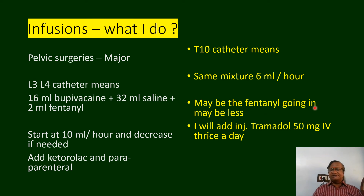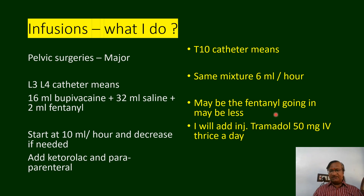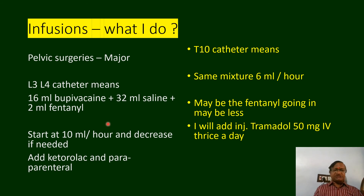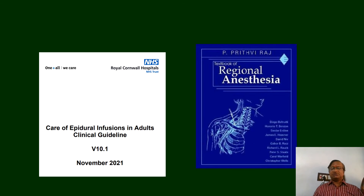For a T10 catheter, the 10 ml per hour may come down to 5 to 6 ml with fentanyl, but tramadol and paracetamol remain the same. For an L4 catheter we need to block approximately 16 segments; where the catheter is higher we need to block fewer segments and can use less volume.